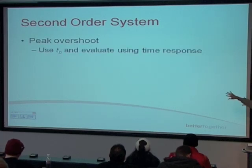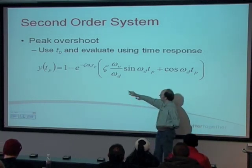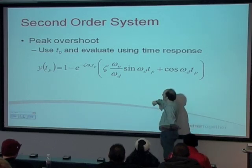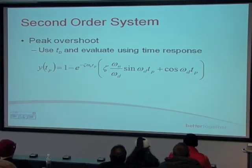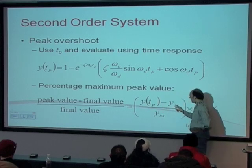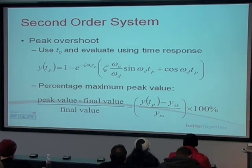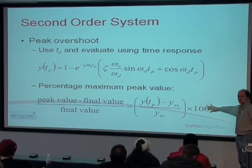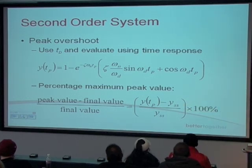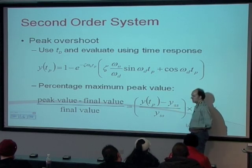For peak overshoot, we take the peak time T_P and substitute it into our equation, then evaluate. That gives an absolute peak value. The percentage maximum peak overshoot is: peak value minus steady state value, divided by the steady state value, then multiplied by 100. This can also be seen as Y(T_P) over Y_SS minus one — the same thing, because Y_SS over Y_SS is one. This is the standard method to calculate percentage overshoot.